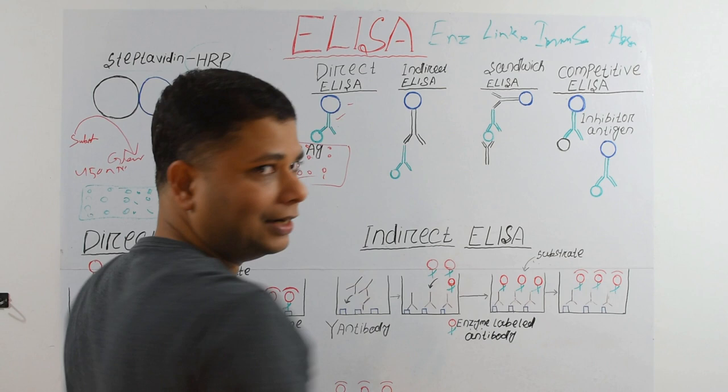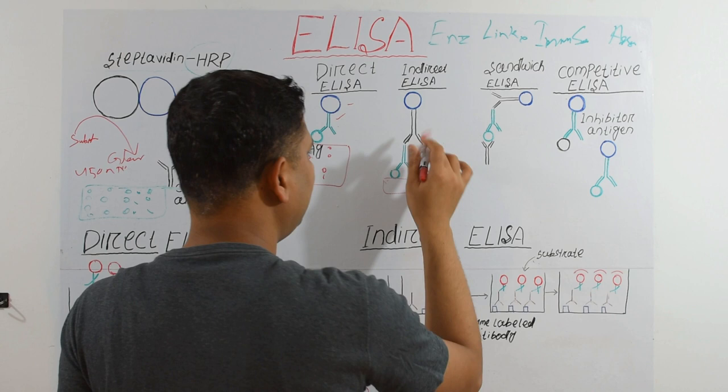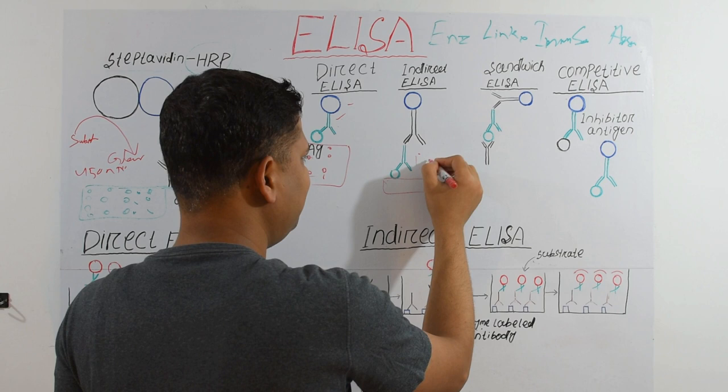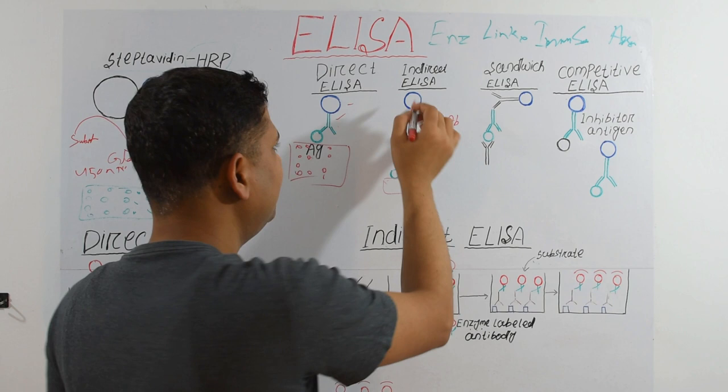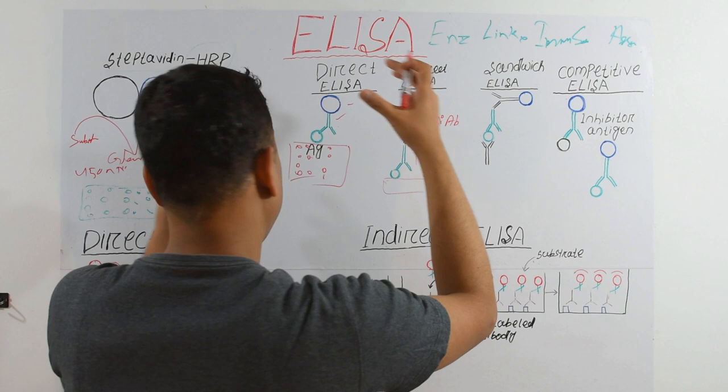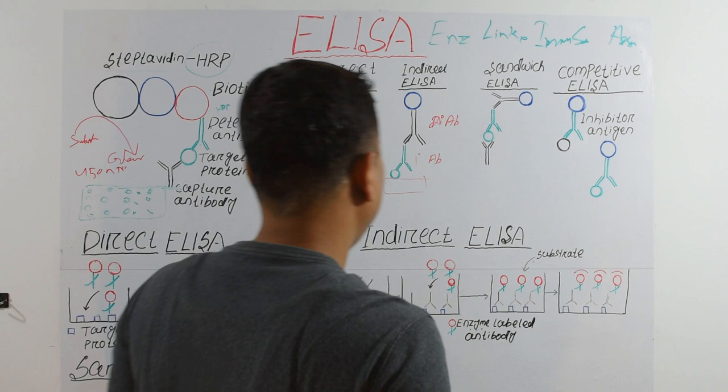In Indirect ELISA, we fix the antigen to the surface, add the primary antibody, and then add a secondary antibody tagged with HRP. We then add substrate, which breaks down to produce a color, and we detect that color.